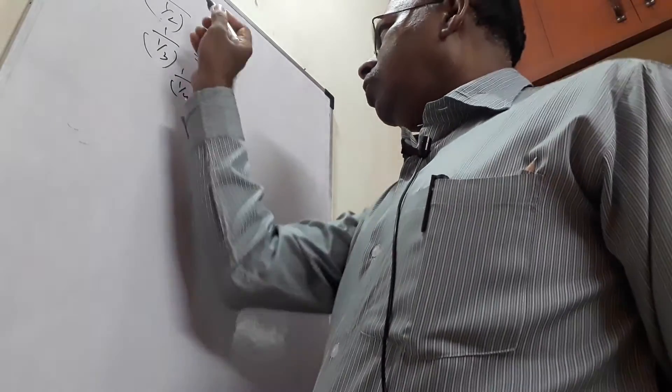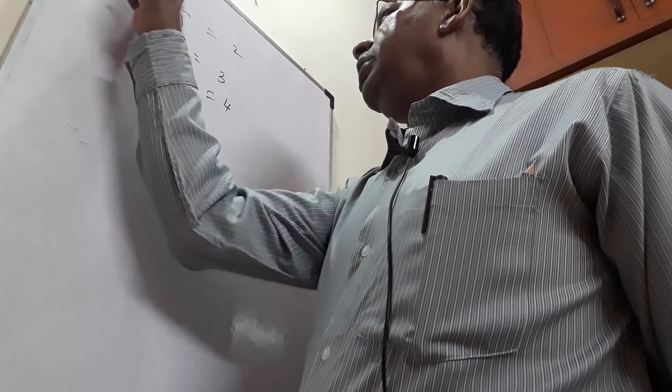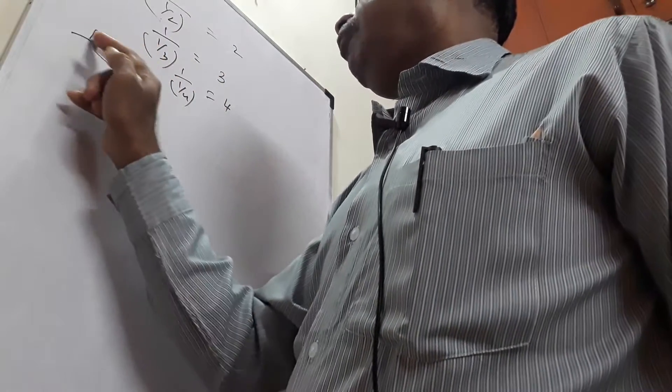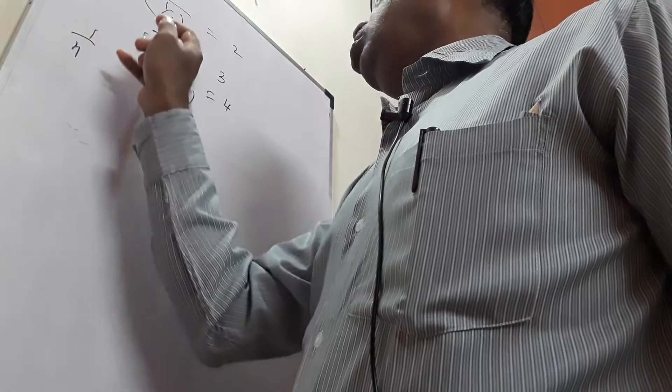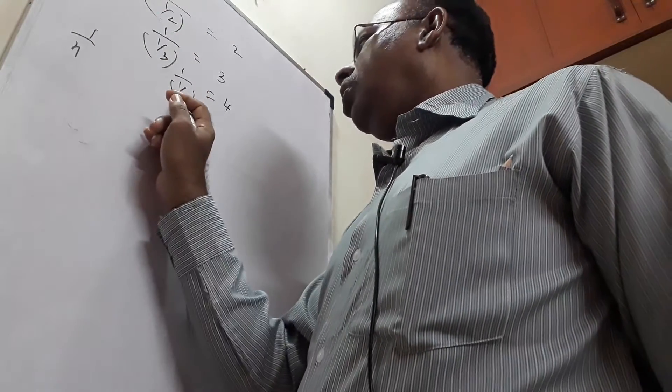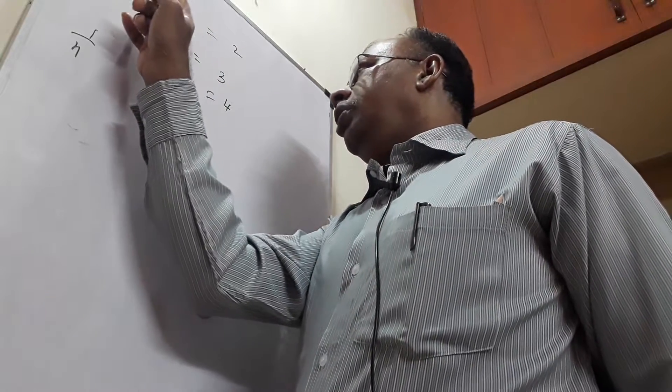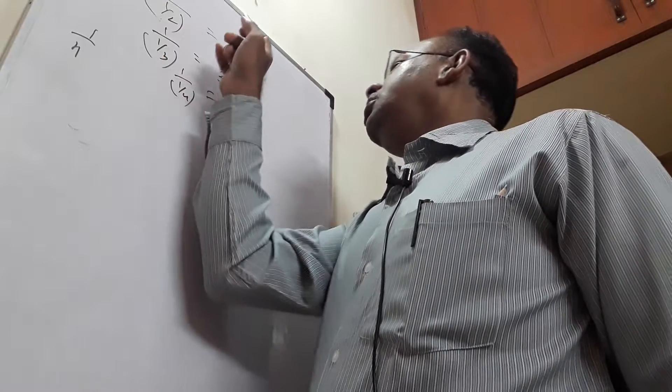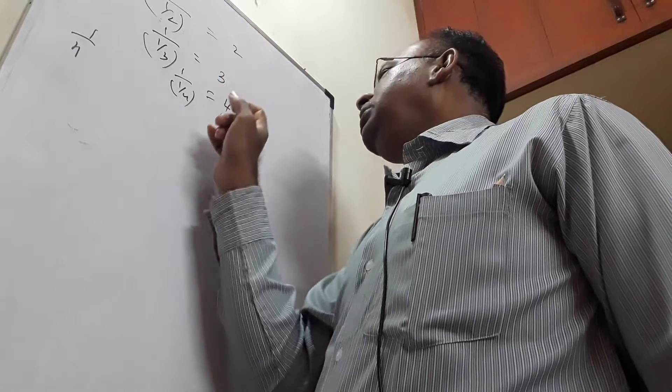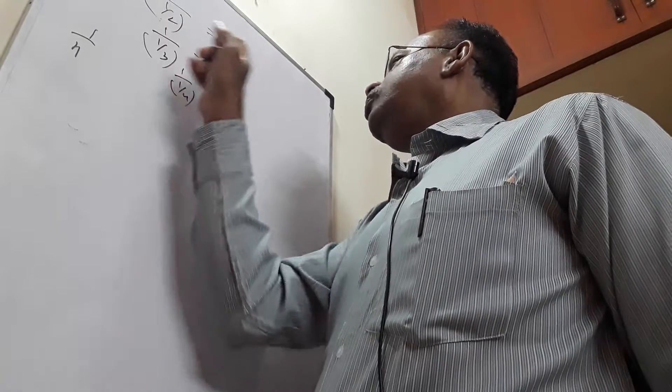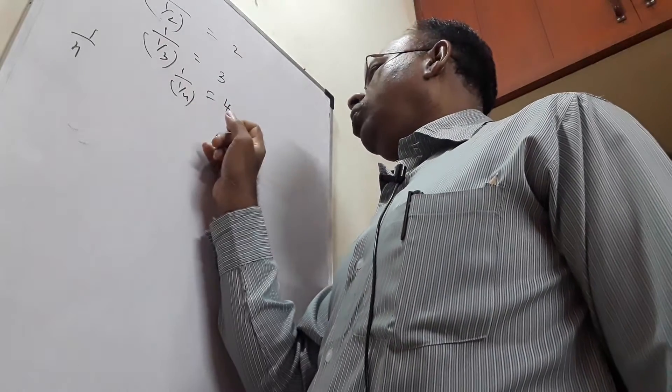Therefore if we look at the denominator here, if it is of the form 1 by n, I keep on reducing the denominator. If I keep on reducing the denominator in the fraction 1 by n, the whole fraction keeps on increasing. Here 1 by 1/2 is 2, 1 by 1/3 is 3, 1 by 1/4 is 4.